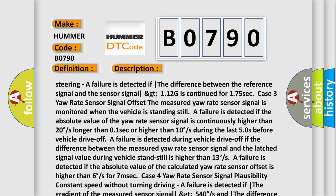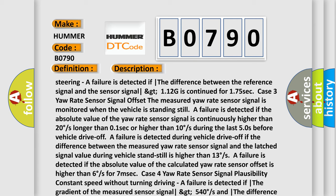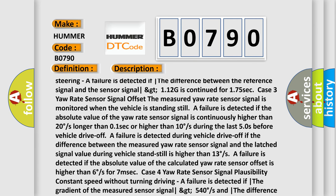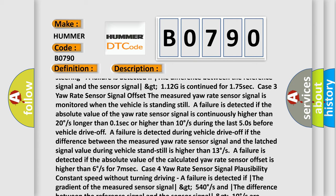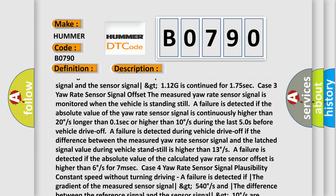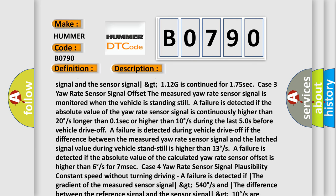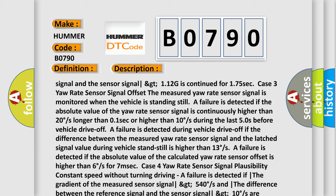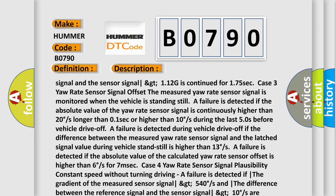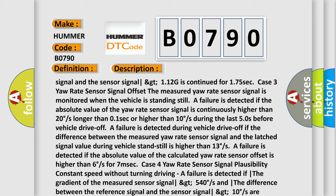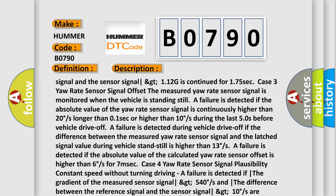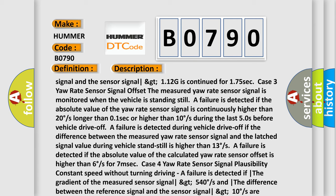A failure is detected if the gradient of the measured sensor signal greater than 540 degrees/s and the difference between the reference signal and the sensor signal greater than 13 degrees/s are continued for 0.5 sec. Maneuvers with variable speed and steering: A failure is detected if the gradient of the measured sensor signal greater than 540 degrees/s and the difference between the reference signal and the sensor signal greater than 53 degrees/s are continued for 0.25 sec. A failure is detected if the gradient of the measured sensor signal less than 540 degrees/s and the difference between the reference signal and the sensor signal greater than 53 degrees/s are continued for 1.75 sec.